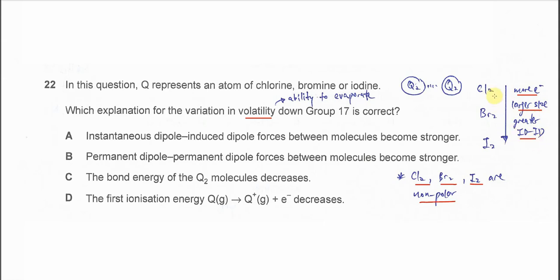We know that the id-id forces between the iodine molecules are the greatest among these three. So therefore, iodine is actually in solid form, chlorine is gas, and bromine is liquid.